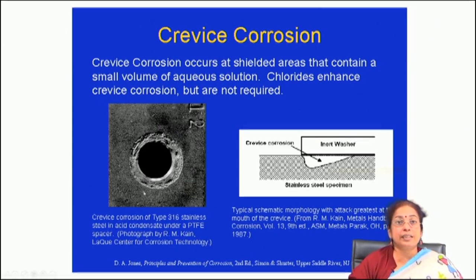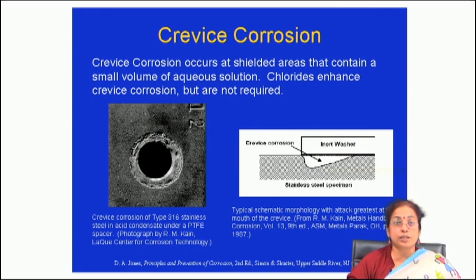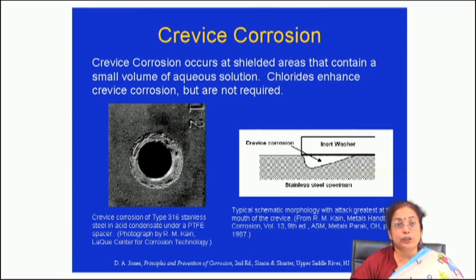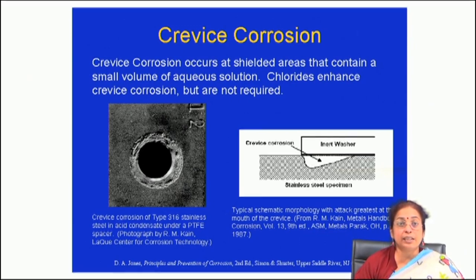When there is a shielded area, the oxygen concentration inside is lower than outside, resulting in differential aeration cell formation. Because of this, there is galvanic attack at the interface between the high-oxygen region and low-oxygen-concentration region, and corrosion starts. Once it starts, in the crevice region where there is electrolyte solution but insufficient oxygen, there is no longer enough oxygen for passive layer formation. As a result, the corrosion rate of the inner layer is much higher and proceeds to a large extent due to the differential aeration cell.